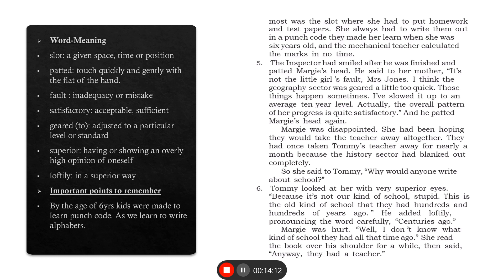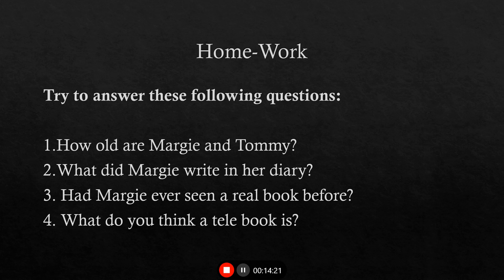All the word meanings are given on the left-hand side of the screen for your understanding. The homework that we will be giving to you today is to attempt these 4 questions on your own. The first question is: How old are Margie and Tommy? Second is: What did Margie write in her diary? Third is: Had Margie ever seen a real book before? And fourth is: What do you think a tellybook is? So we have taken this particular section today and hence I have given you 4 questions.